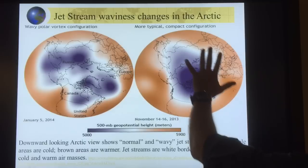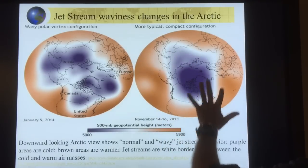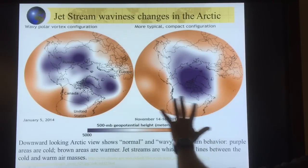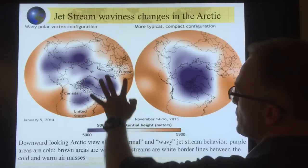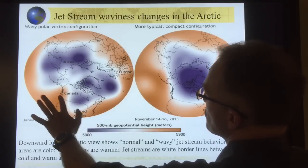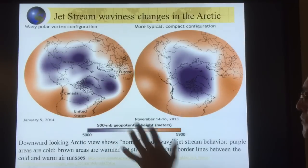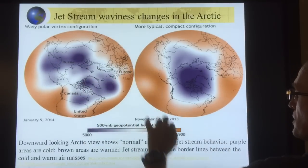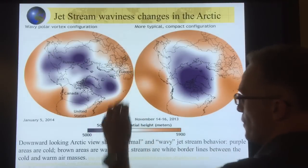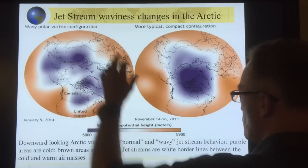The Arctic warming is changing the jet streams. A more typical jet stream configuration shows it circling the North Pole in a relatively tight band — the white area between the two color zones. In the altered configuration it's much wavier, with very deep troughs going far south and ridges extending far north. These are 500-millibar geopotential heights indicating temperature. The jet stream is slowing down and becoming much wavier.